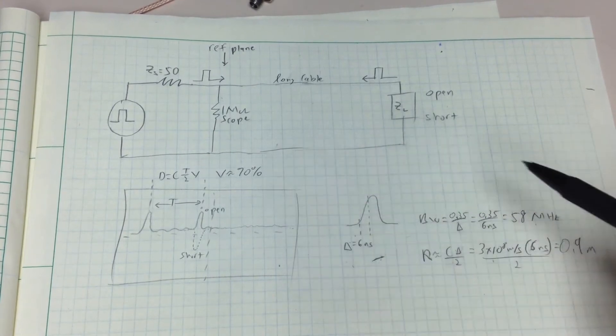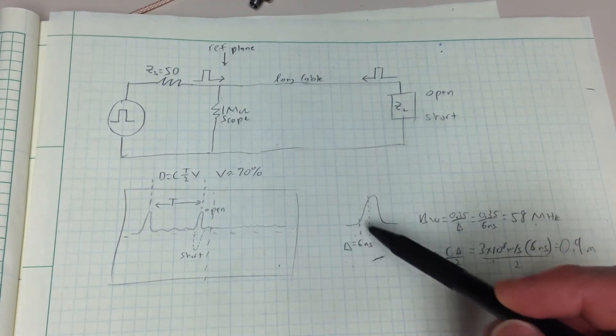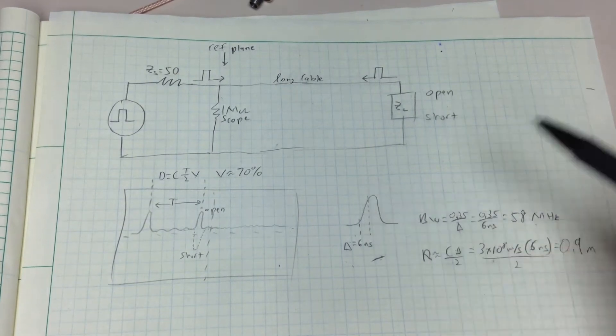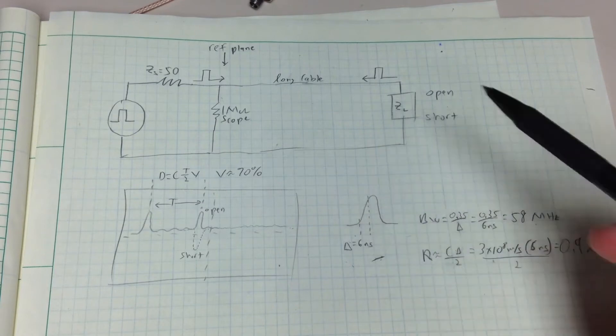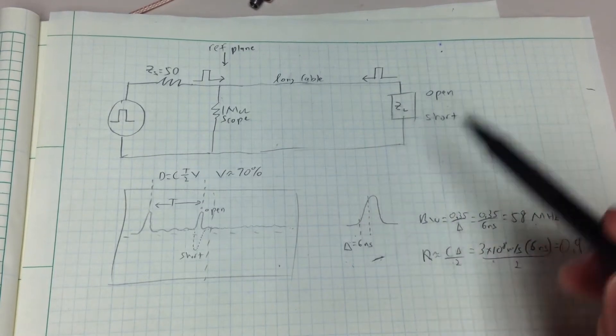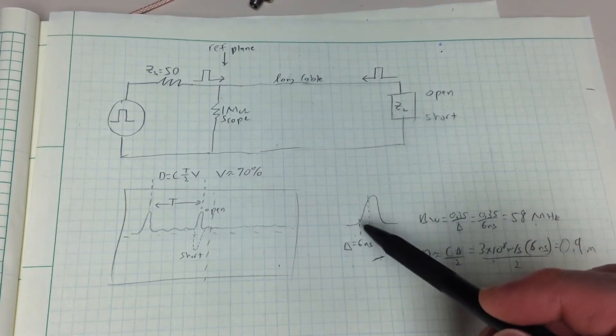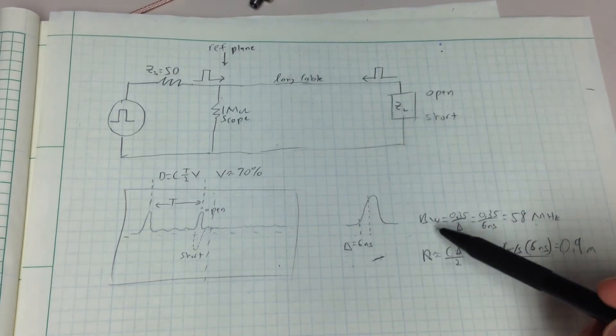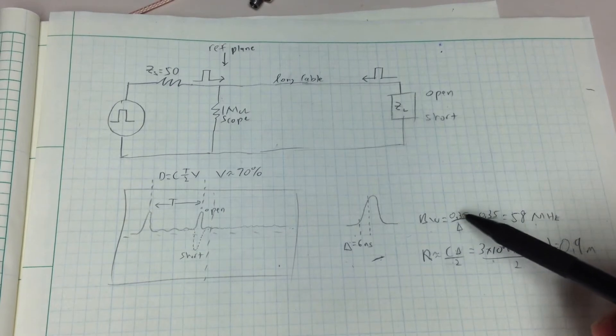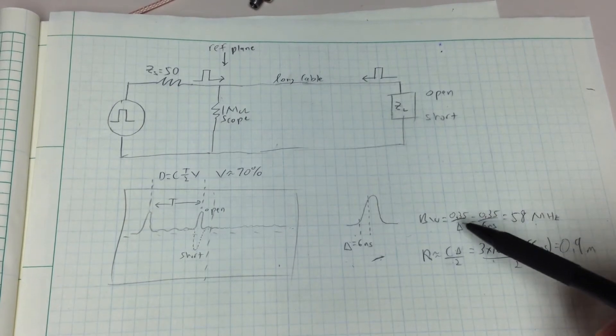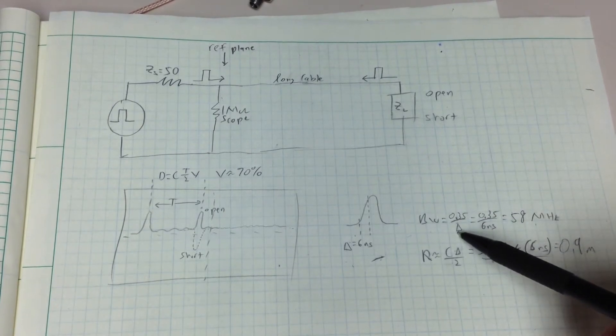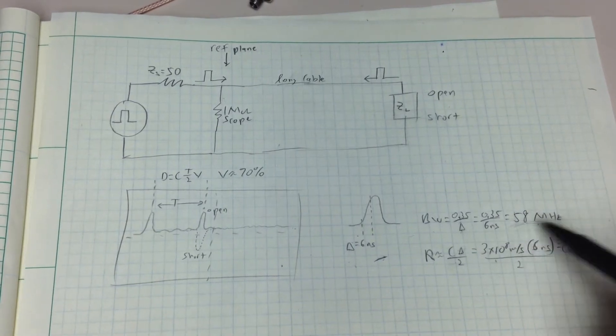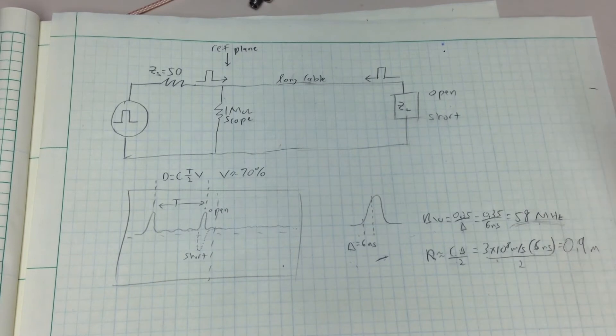The bandwidth required for the oscilloscope is related to the rise time. The signal generator I'm using has a minimum 6 nanosecond rise time, which isn't great for TDR. There's stuff that have sub-picosecond rise times for extremely good resolutions, but this is limited to 6, which is what you get for a few hundred-dollar generator. Anyway, the bandwidth you need for the oscilloscope is going to be approximately 0.35 divided by that rise time, which I have here as delta, which comes out to about 58 megahertz. So you can do this with a standard 100 megahertz scope.